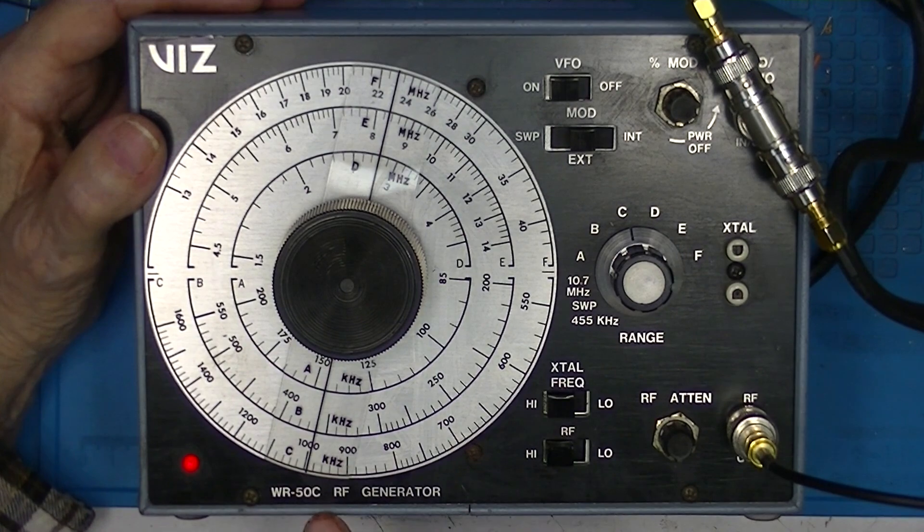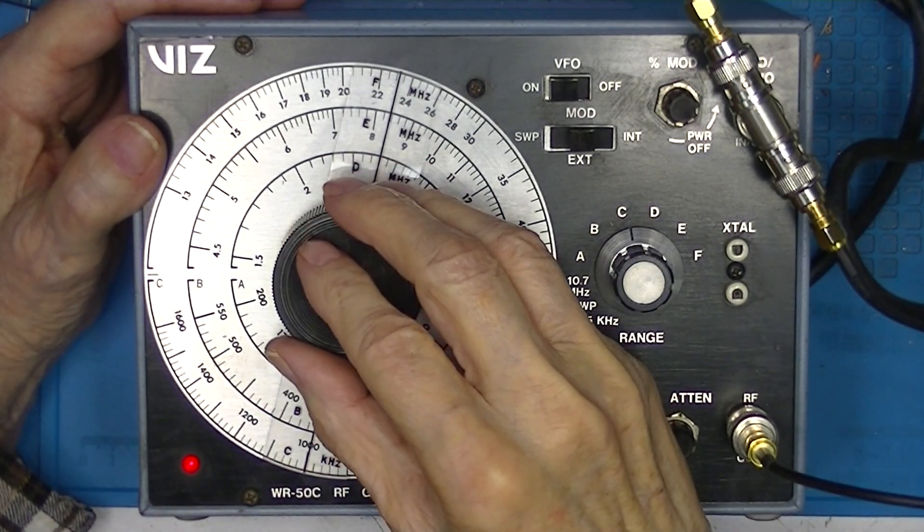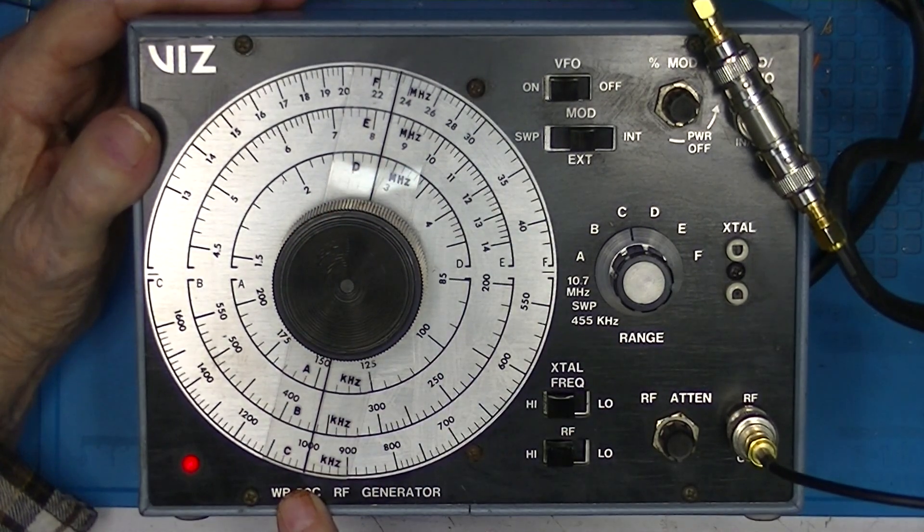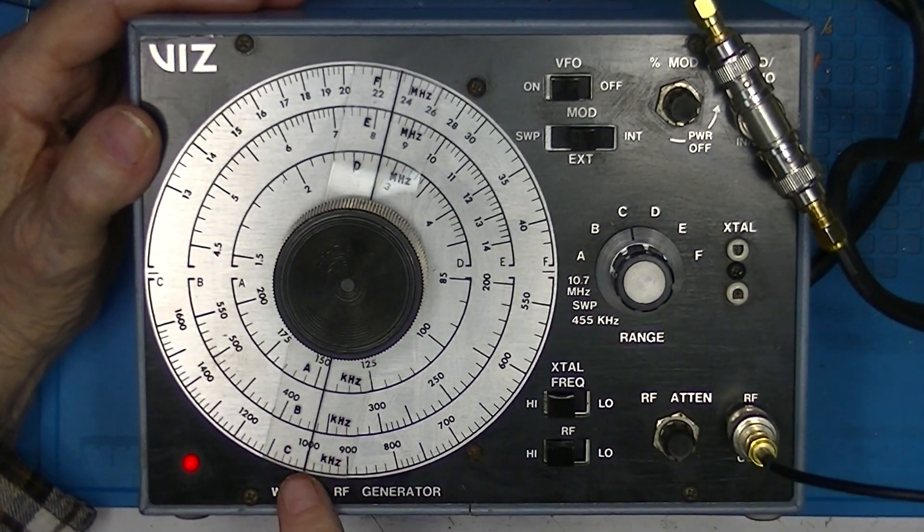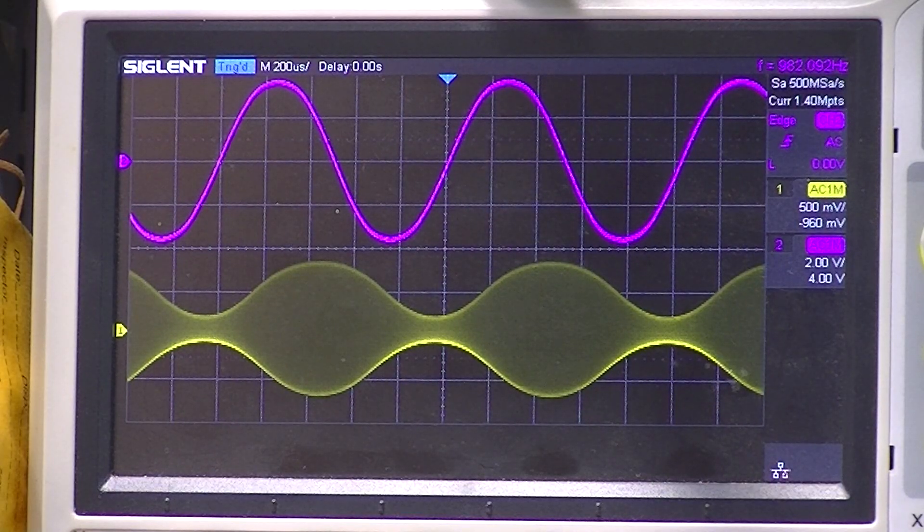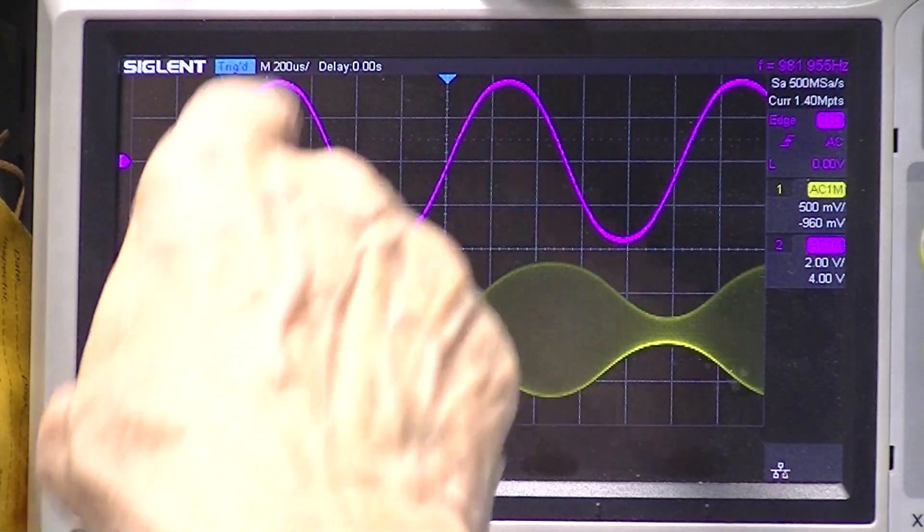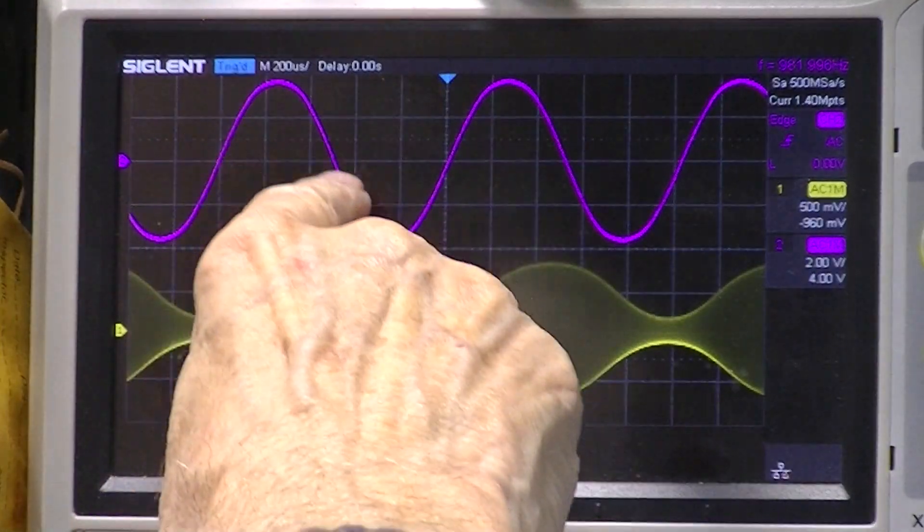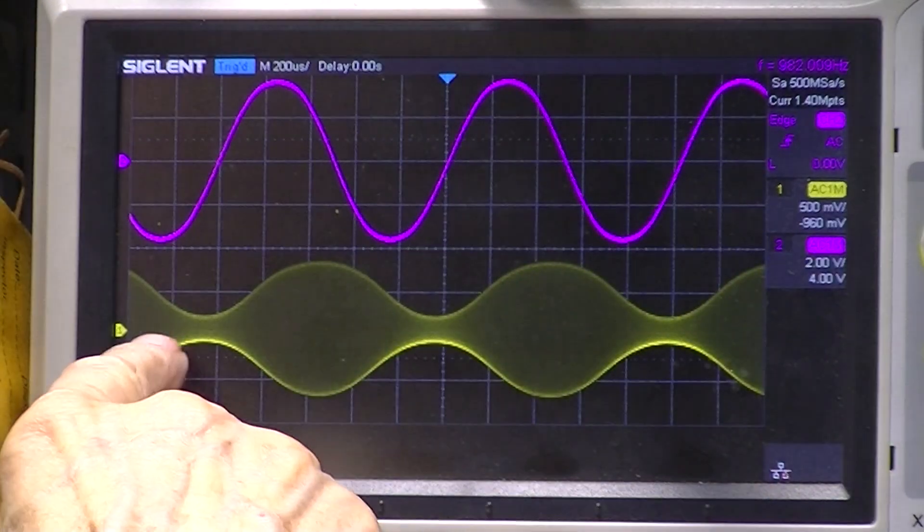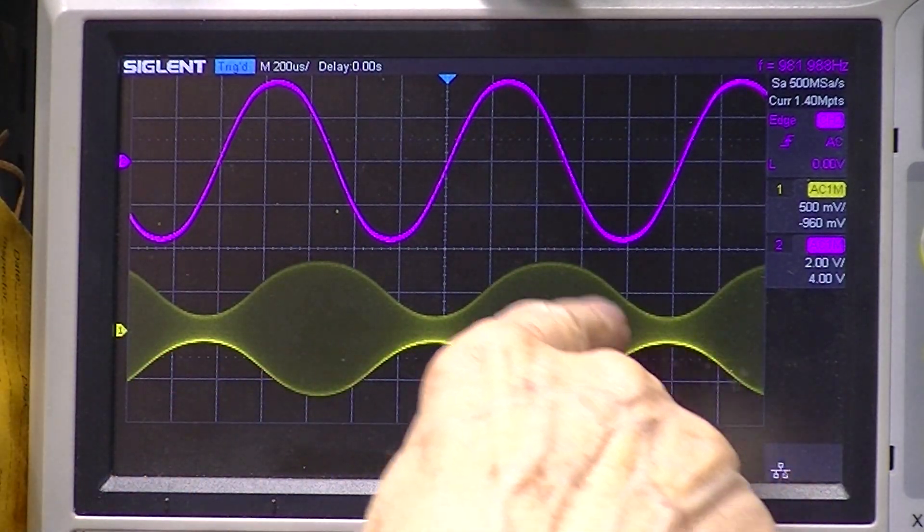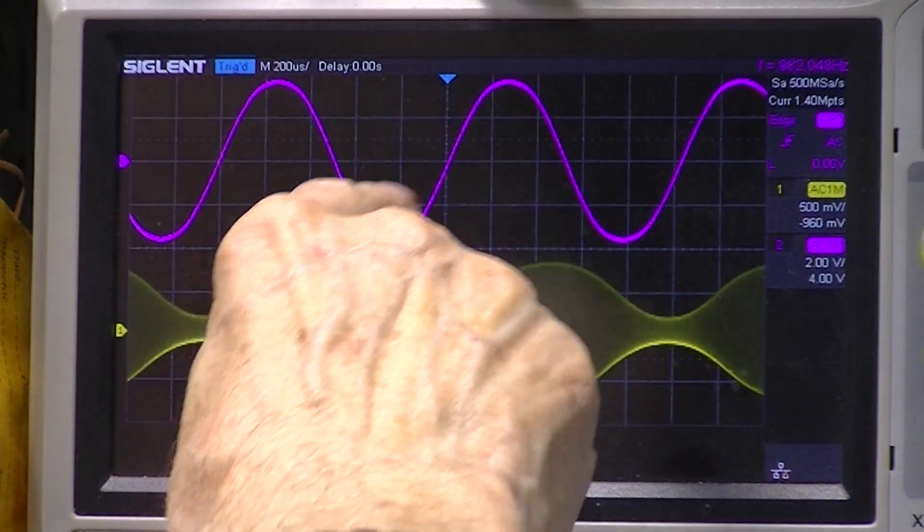I'm still set for a one megahertz output. I'm on C. You can see this is a, just happens to be a 1,000 hertz sine wave. And here is the modulation envelope when we've got a sine wave displayed.